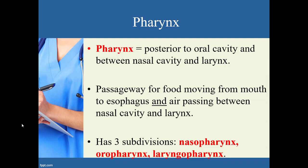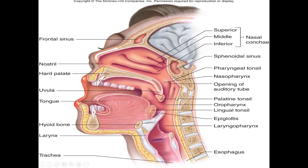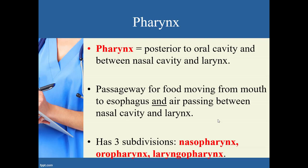Because the pharynx covers such a variety of areas, it's identified by region. There are three regions: the nasopharynx, oropharynx, and laryngopharynx. The prefixes tell you what structures they are near — nasopharynx is just behind the nasal cavity, oropharynx is just behind the mouth, and laryngopharynx is right near the larynx, the voice box. On this image you can see each region labeled accordingly.